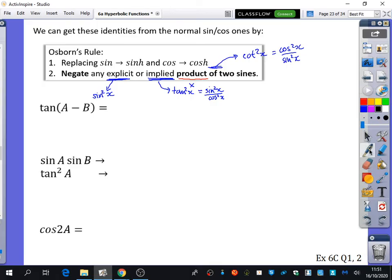So can we write down, now using Osborn's rule, if we're going to first of all write down what tan of A minus B is, and then we're going to write down what tanh of A minus B is.